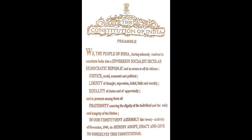The Constitution of India Preamble: We, the people of India, having solemnly resolved to constitute India into a sovereign, socialist, secular, democratic republic and to secure to all its citizens Justice, social, economic and political; Liberty of thought, expression, belief, faith and worship; Equality of status and of opportunity; and to promote among them all fraternity, assuring the dignity of the individual and the unity and integrity of the nation. In our Constituent Assembly, this 26th day of November 1949, do hereby adopt, enact and give to ourselves this Constitution.